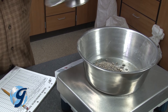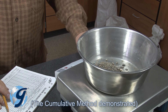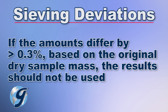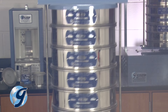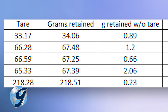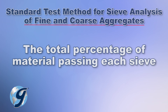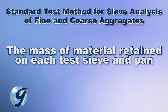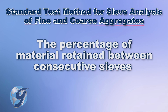The total mass of the sieve sample should match closely with the original mass of the test sample before sieving. If the amount differs by more than 0.3% based on the original dry sample mass, then the results should not be used and the test should be repeated. In recording the mass of each sample size and determining the gross test sample mass, you should include the total percentage of material passing each sieve and/or the mass of the material retained on each test sieve and pan and/or the percentage of material retained passing consecutive sieves.